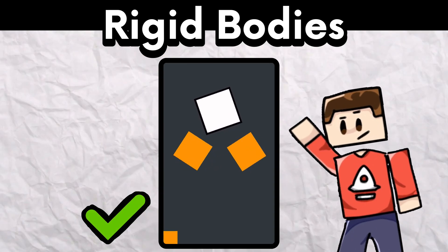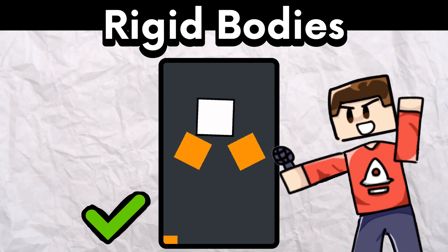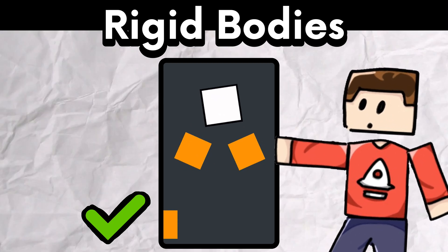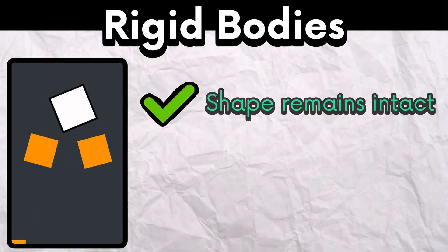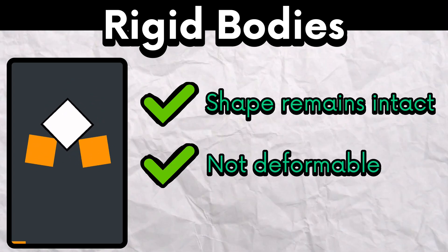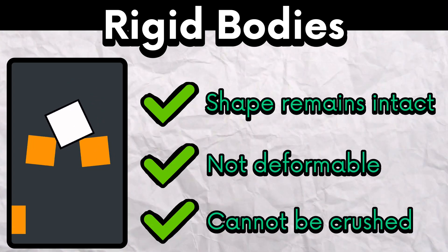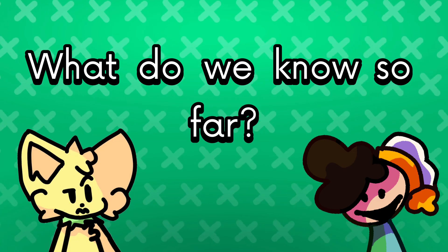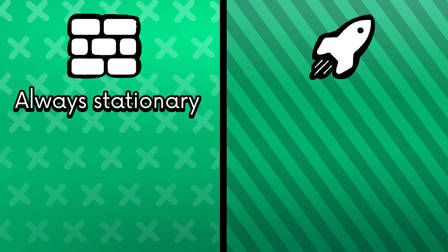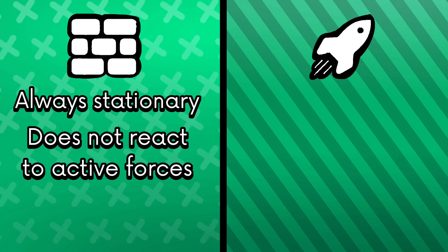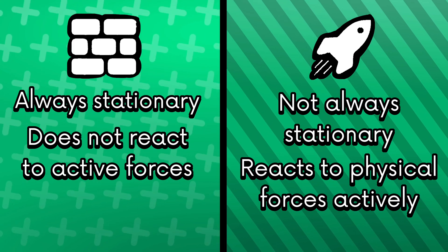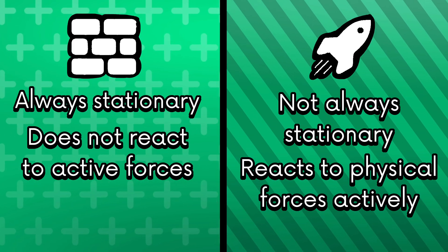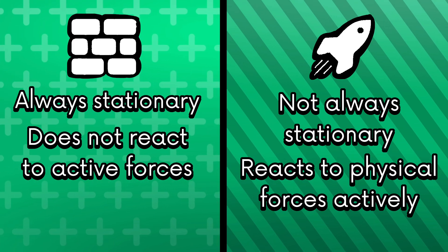Some people might not care about this, but it is useful to know because your objects will remain in the same shape and size no matter how much you push them around. So, to summarize: wall objects are always stationary; physics objects are not always stationary and can react to physical forces; and wall objects and physics objects are both rigid bodies.